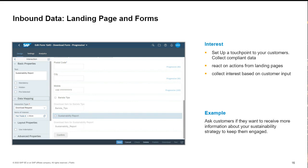As an example for Galodoro: you could offer a sustainability report to the customer, and when they request it via email, you would simultaneously enhance the customer profile with the interest of sustainability.